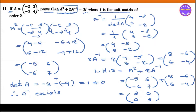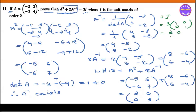The right-hand side gives us 3I. So 3 times the identity matrix is 3, 0, 0, 3. The left-hand side equals the right-hand side, which is 3I. This confirms the result.